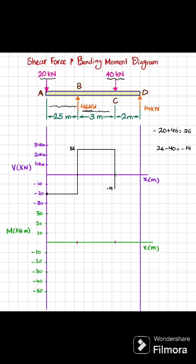From C to D there is no other load, so it will remain the same till the end. At the end you have plus 14, so minus 14 plus 14 equals 0. The shear force returns to 0, completing the shear force diagram.